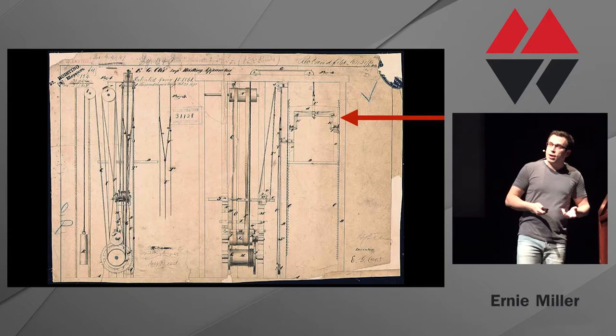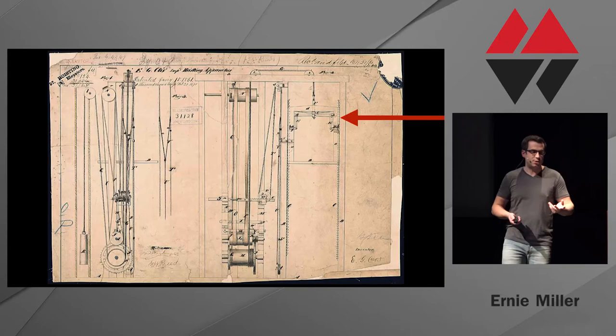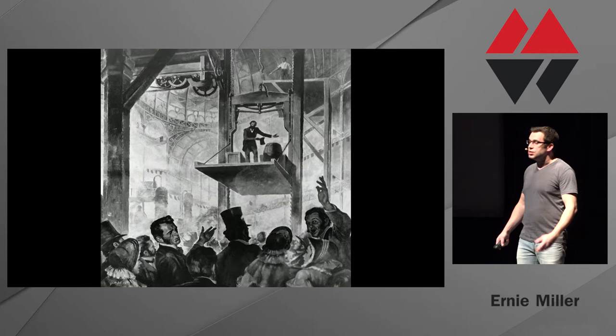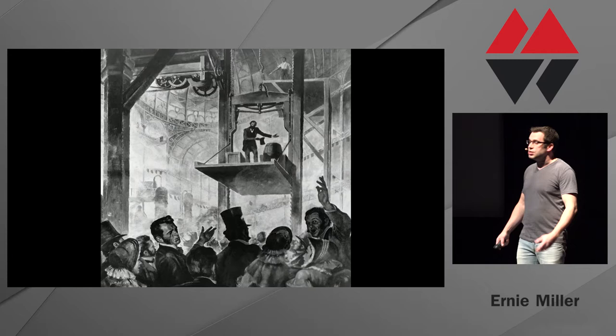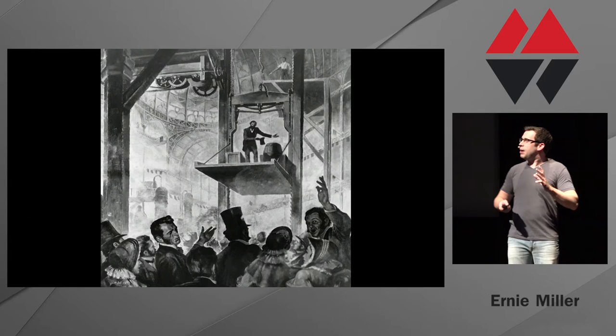He didn't think much of it at the time. He didn't patent it, didn't try to sell it, and didn't even ask his managers for a bonus. But three years later, the bed frame business wasn't going so well, so he formed a company to sell the elevators. He got no business for several months, and then came the 1854 New York World's Fair, where he saw a great opportunity to be very dramatic — having a helper actually cut the rope and show that the hoist wouldn't fall. It was like what people do with NASCAR — it's all about the crashes.